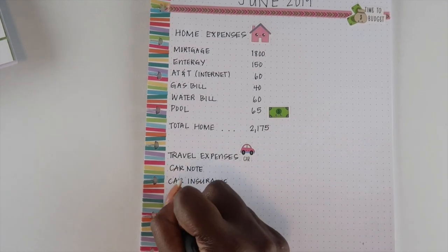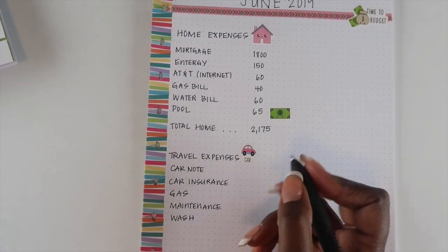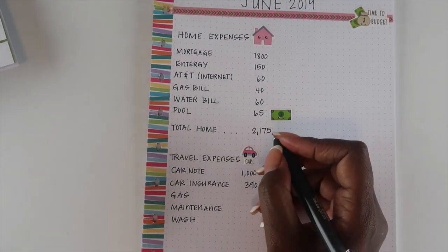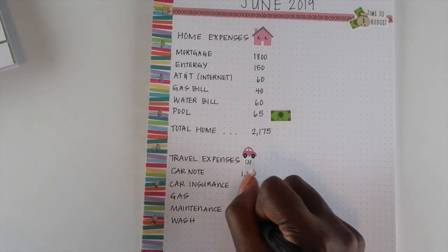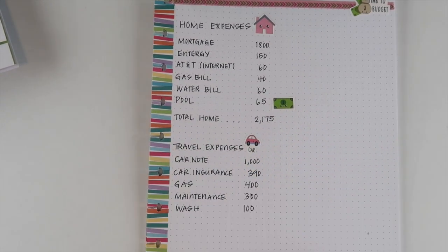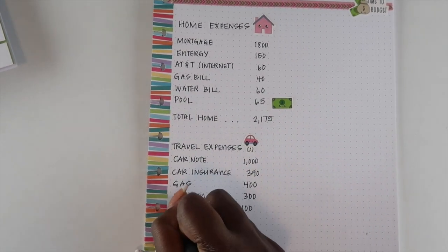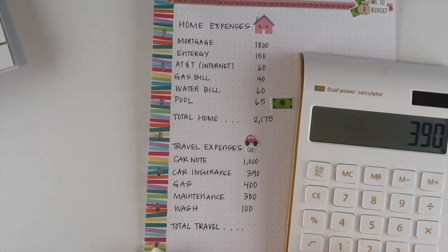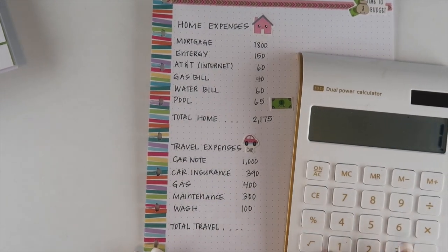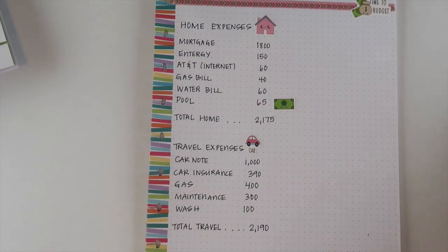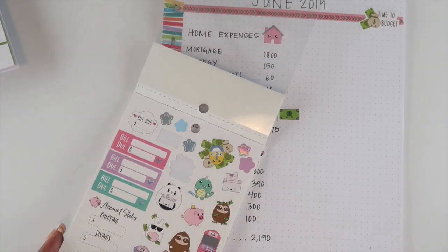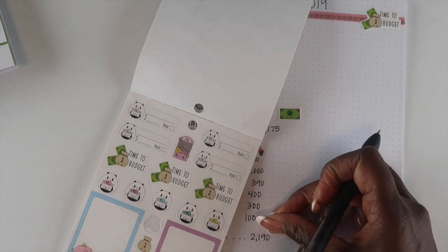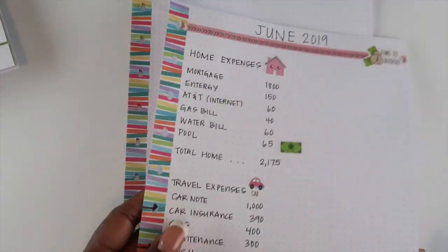The next set of expenses are our travel expenses: car note, car insurance, gas, maintenance, and car wash. I do have maintenance this particular month, so I've already budgeted in the $300 I would need for that. I'm hoping I won't have to take anything out of sinking funds and will be able to use it out of my actual June budget.